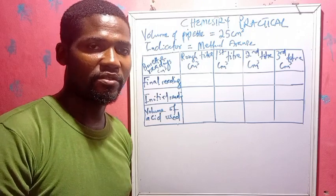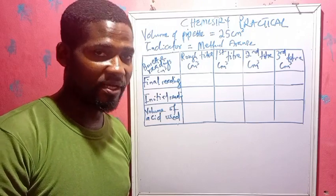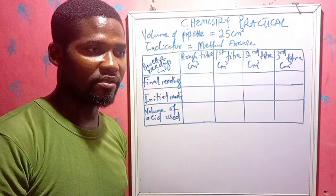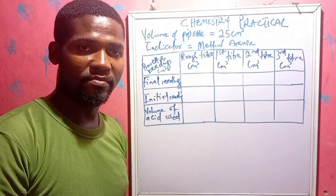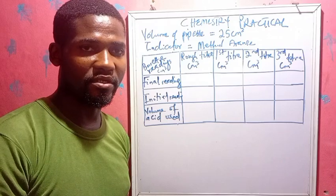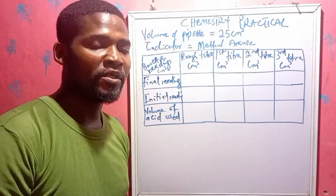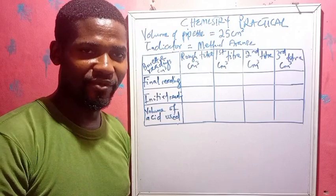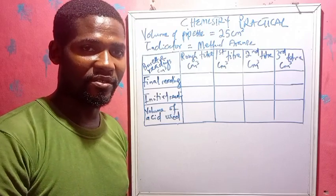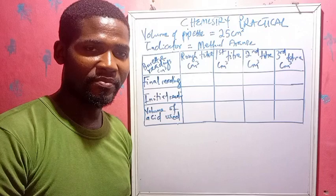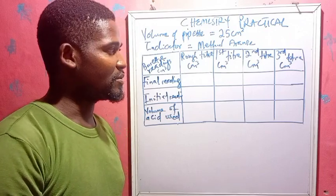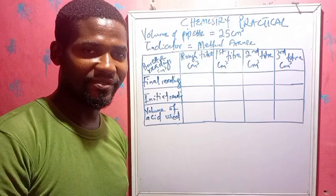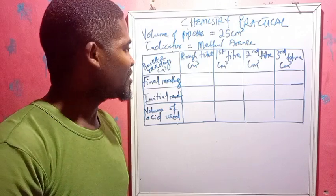We are looking at part one of the chemistry practical. You have titration, which is quantitative analysis, then qualitative analysis, and then the third part based on general knowledge — the alternative part. If this video comes across your feed, kindly give us a like or subscribe to the channel. We have lots of knowledge here.